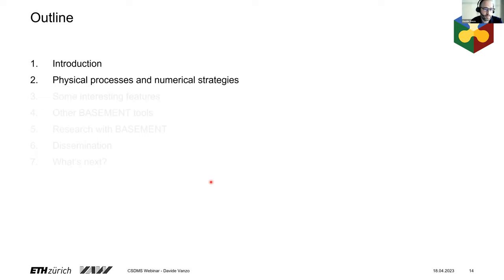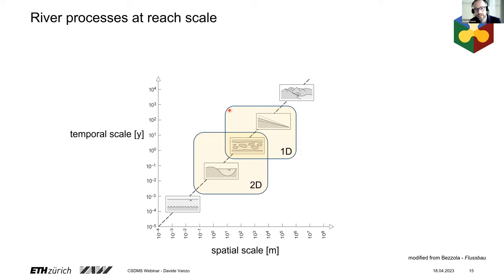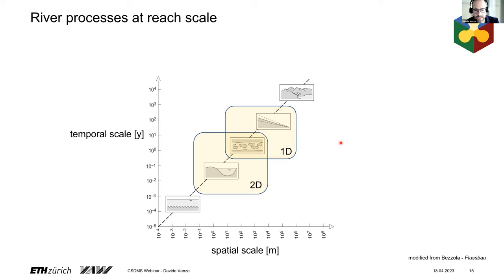Moving to the more interesting part: to set the tone, we are situated in the spatial and temporal scale of 2D and 1D morphodynamic processes. We simulate processes on the temporal scale of some decades and some kilometers, especially when using the 1D version of the model, up to event scale — flood event scale processes that occur within days, in a more confined spatial scale of some hundreds of meters to some kilometers, where we can use a more accurate and detailed approach.